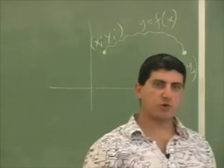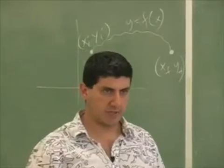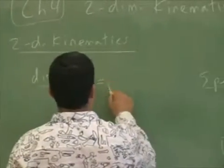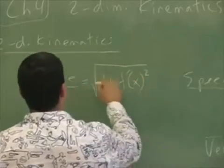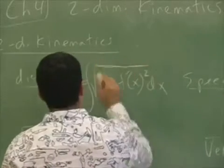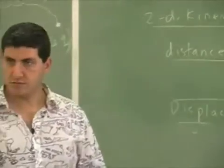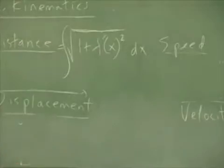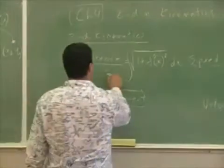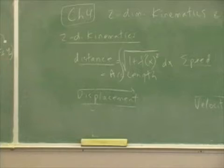To find the distance traveled, we're going to use a result from calculus called the arc length integral — the arc length formula. The distance traveled is equal to the integral of the square root of one plus f-prime of x squared, times dx, where the dx is outside of the square root. With this formula we can find the total distance the particle traveled in two dimensions.